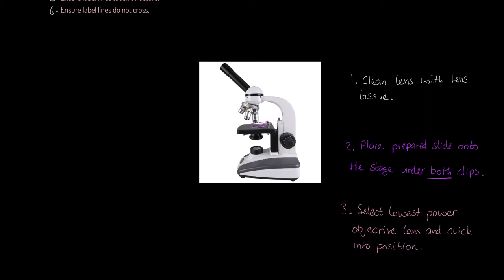Thirdly, we're going to select the lowest power objective lens and click that into position. So, it must be clicked into position. And because it's the lowest power, it's likely to be the four times magnification lens that you're going to use first. On most microscopes, that will be the case. So, you're going to click it into position and you're going to use the lowest power lens first.